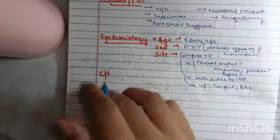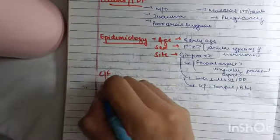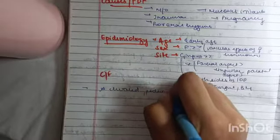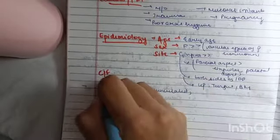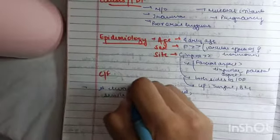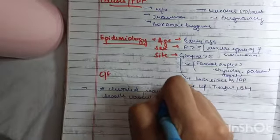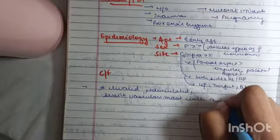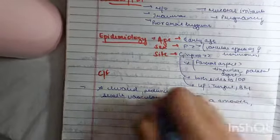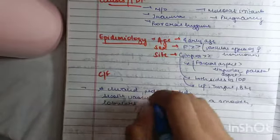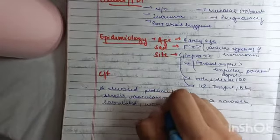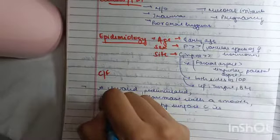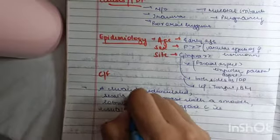Now let's come on to the clinical features. Now it is an elevated pedunculated sessile vascular mass with a smooth lobulated body surface which is usually ulcerated.